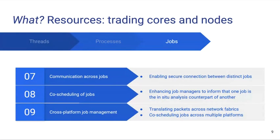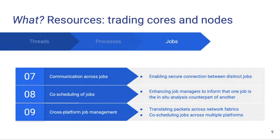We could also consider a wider decoupling where we submit different jobs — one job to run the simulation and one job to run the in-situ analysis. One challenge here is communication across jobs, so we need a secure connection between them. There is also the problem of co-scheduling: if you submit your simulation and then later want to submit a job for in-situ analysis, you need a way to tell the scheduler you urgently need resources because this analysis job must connect to an already running simulation. We can even go further and consider cross-platform job management — for instance, the simulation running on a supercomputer while the analysis runs on another supercomputer at the same or a different facility, or even in the cloud, requiring joint job scheduling.